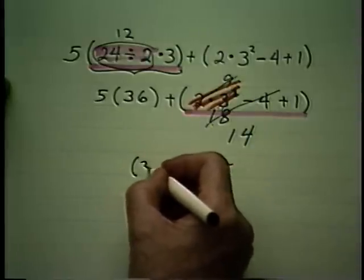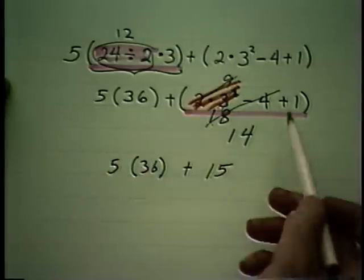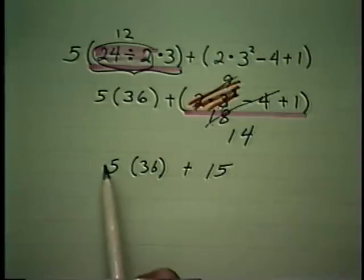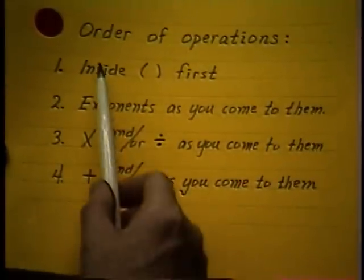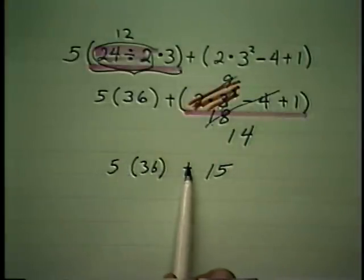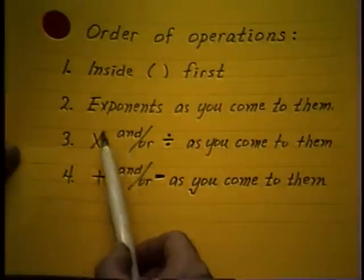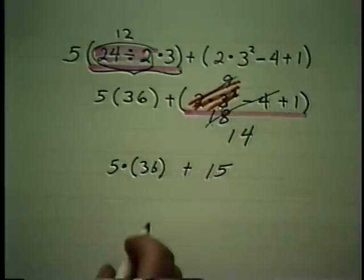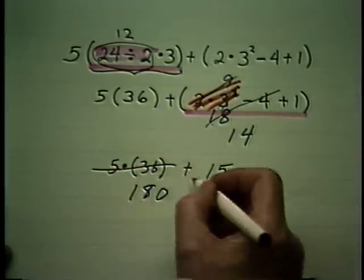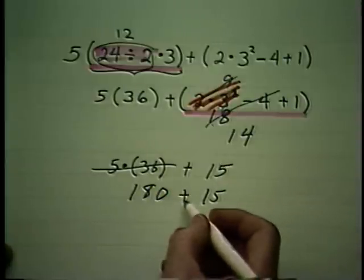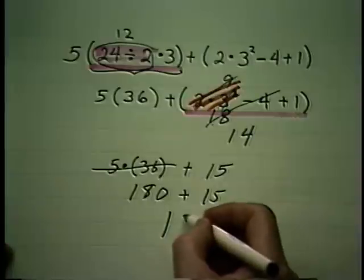Now I'll rewrite the problem to keep from getting confused. Looking for more parentheses — there aren't any. Back to the beginning. No more parentheses, so now we look for exponents — there aren't any. Then look for multiplications and/or divisions as you come to them. There is one — it's not written but it is there — and it says 5 times 36, which is 180. And now there's just the 15 being added left, so doing that we have 195.